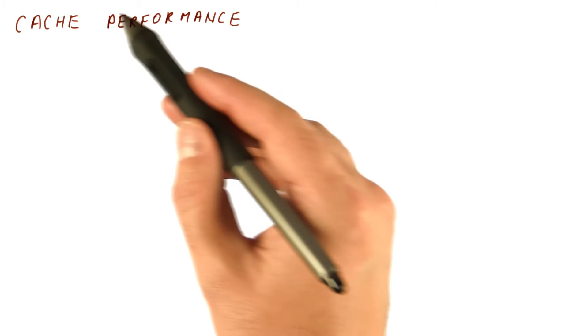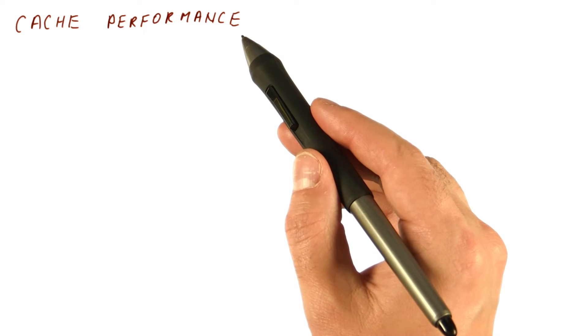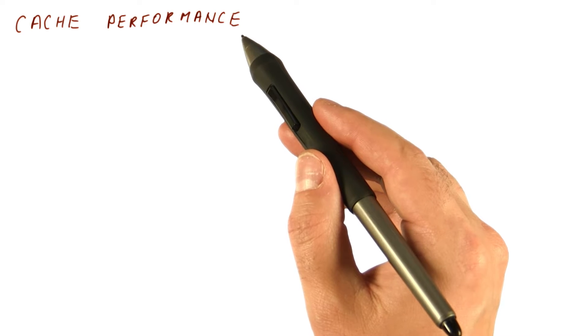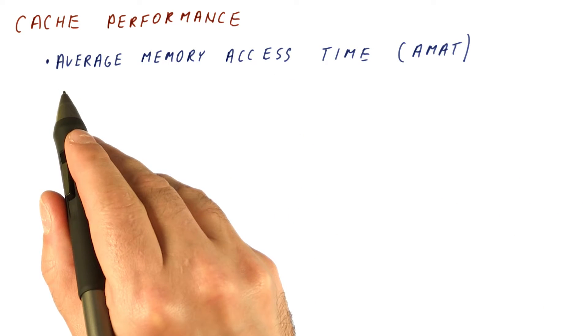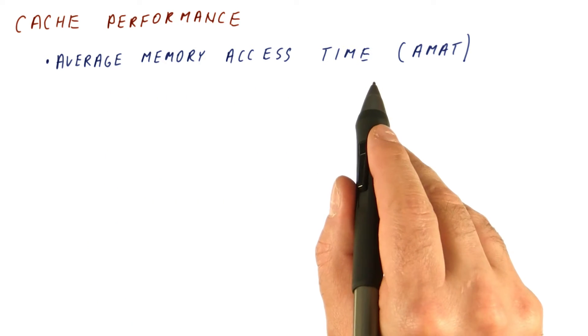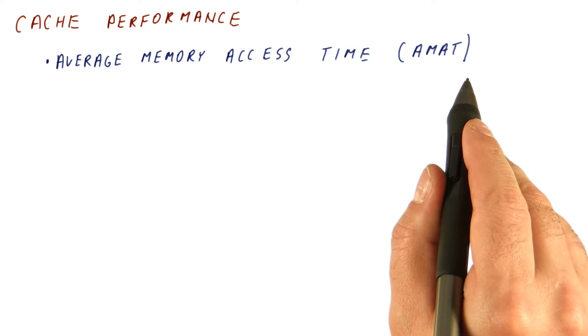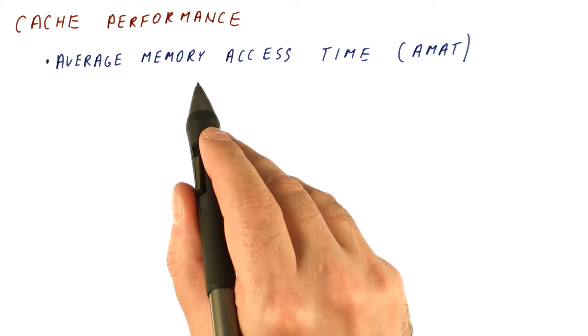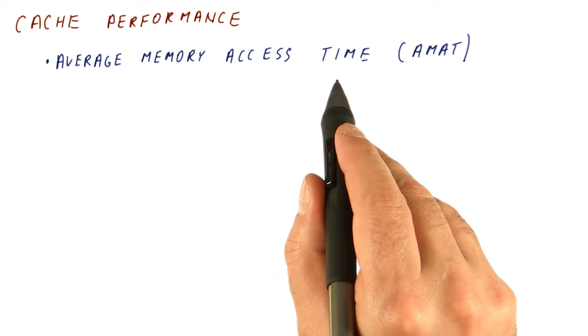So let's see, what does it take to have a good cache? Or what are the properties of a good cache? We want our system to have a good average memory access time, or AMAT. And this is the access time to memory as seen by the processor.